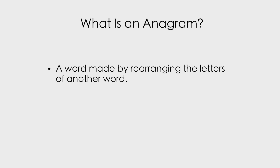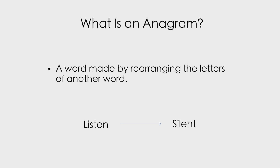One such word is 'listen.' An anagram of listen is 'silent,' which is very interesting because they are both quite connected. So that is an anagram — a scrambled word that creates another word. When you rearrange the letters of something, you get a new word.